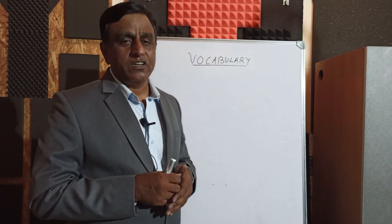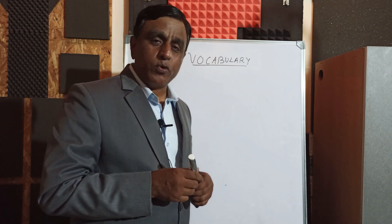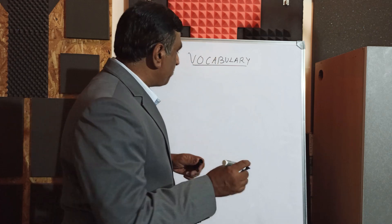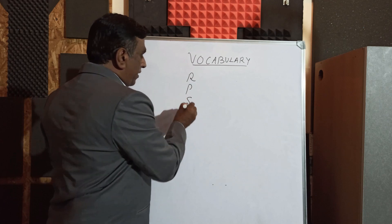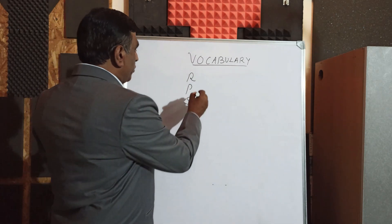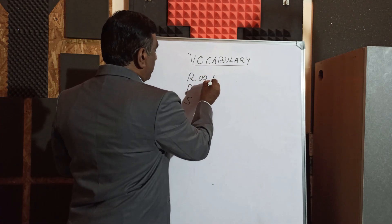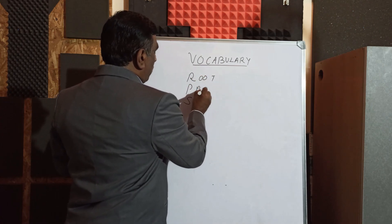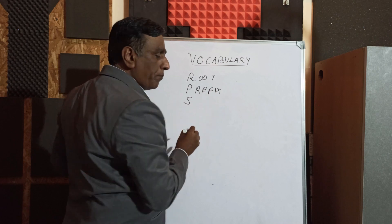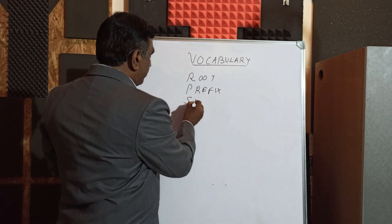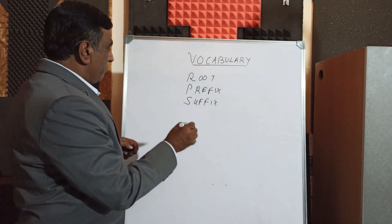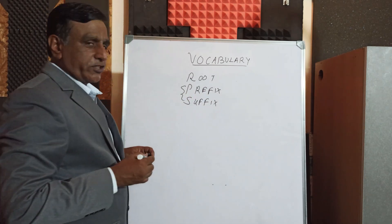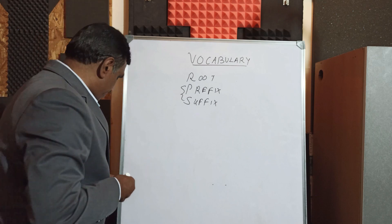Now the question is: how do we improve? There is a method by which we can improve our vocabulary, and that method is called the RPS system — R stands for Root method, P stands for Prefix, and S stands for Suffix method. We will take these two methods first: prefix and suffix method.